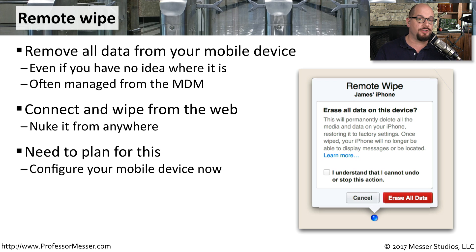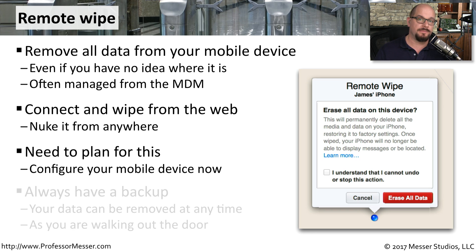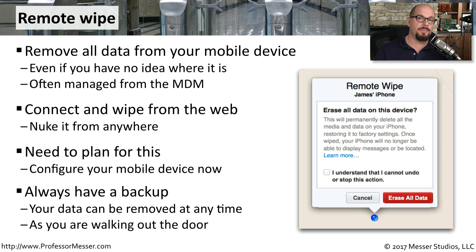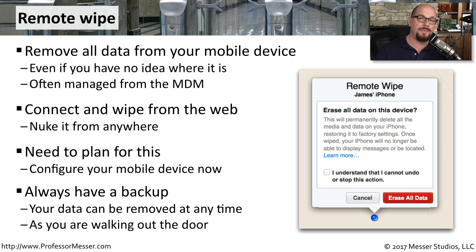If the device is not being managed by a mobile device manager, you'll want to configure the device for remote wipe capabilities using a set of credentials. The important thing is that the security administrator can delete all of this data at any time. It's not unusual for someone who's leaving the organization to have everything on their personal mobile device suddenly deleted without any warning — it's a policy normally agreed to when someone adds their device to the mobile device manager. So it's important to have backups, especially if you keep any private information on the mobile device.